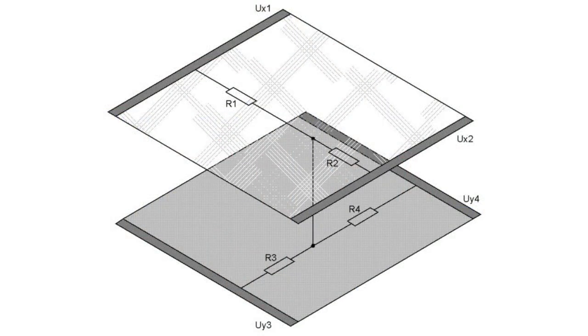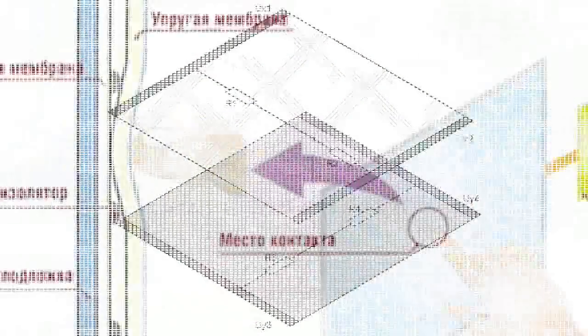Let's consider the operating principle of a resistive touchscreen. A resistive touchscreen consists of a glass board and a flexible plastic membrane. Both the board and the membrane are covered with resistive coating. The space between the glass and the membrane is filled with micro-insulators, which are evenly distributed along the screen's active area. They insulate the conductive surfaces.